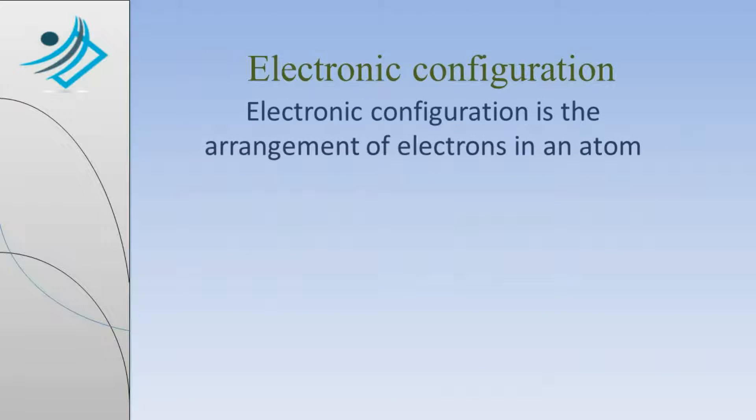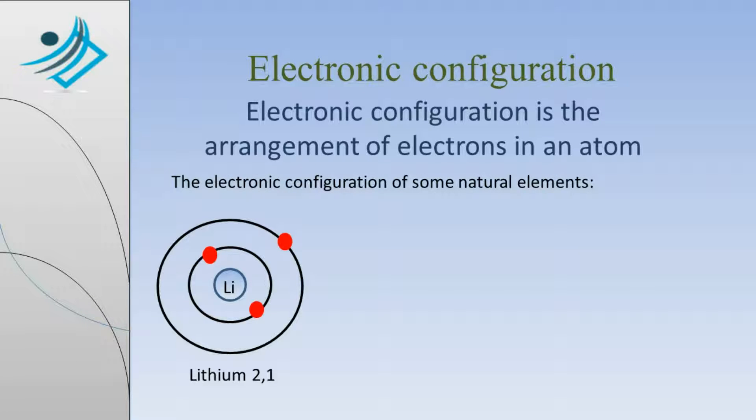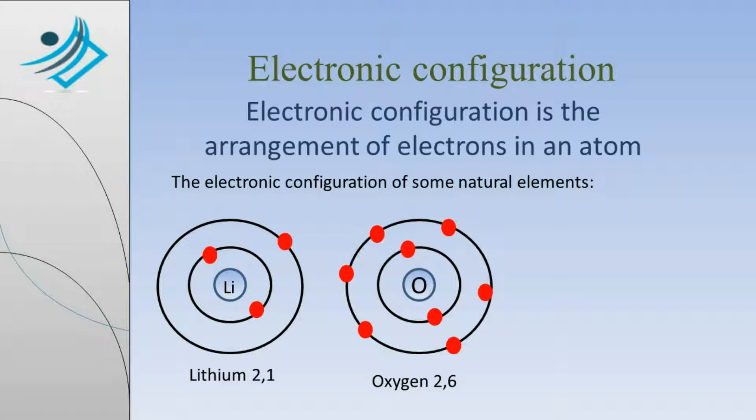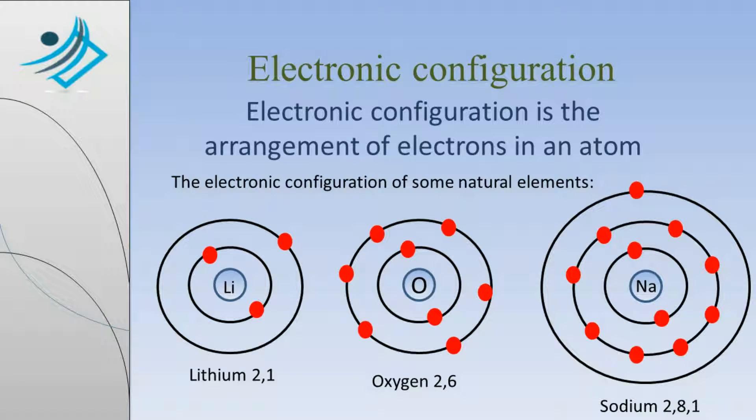Electronic Configuration is the arrangement of electrons in an atom. These are the electronic configurations of some natural elements. Lithium has 2, 1. Oxygen has 2, 6. And Sodium has 2, 8, 1.